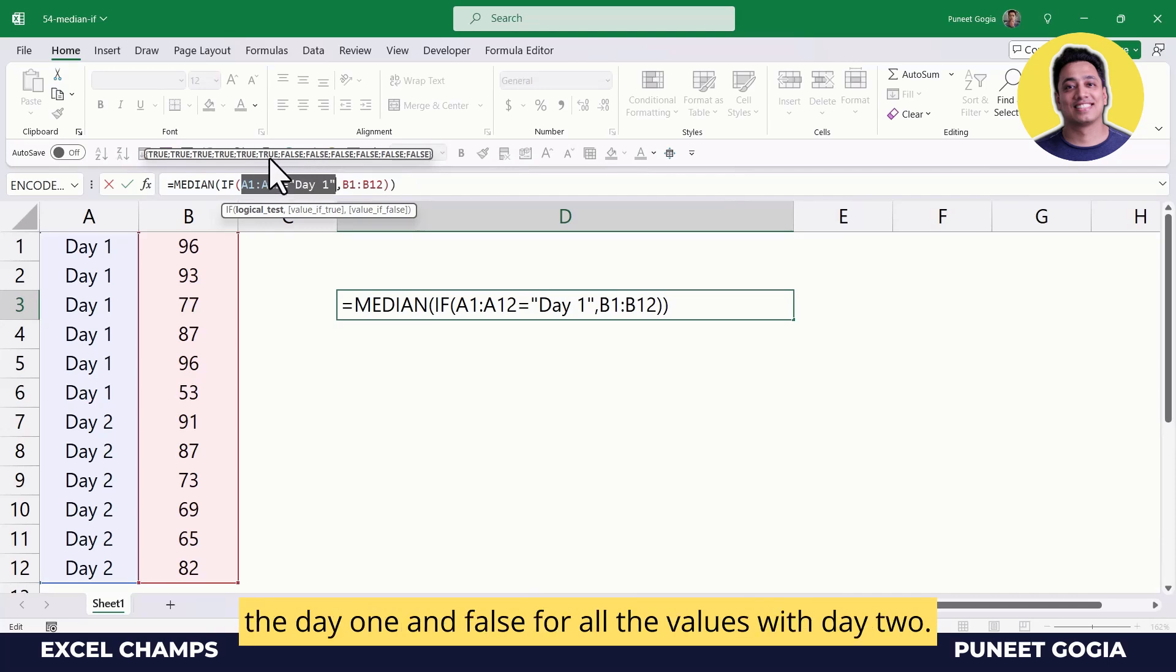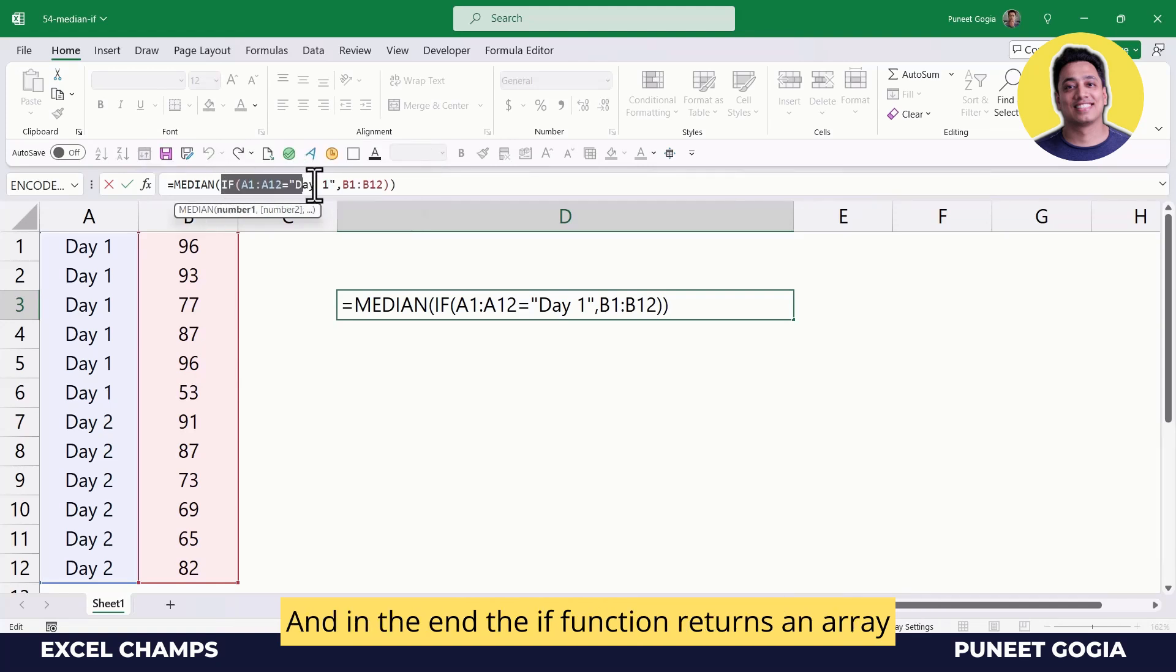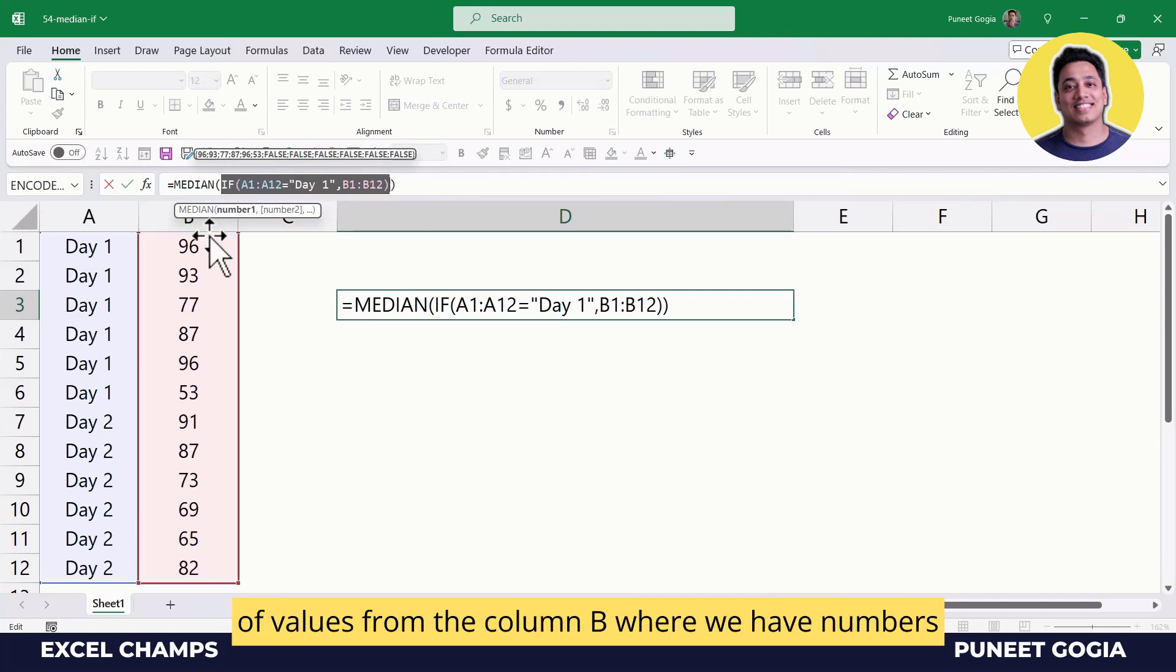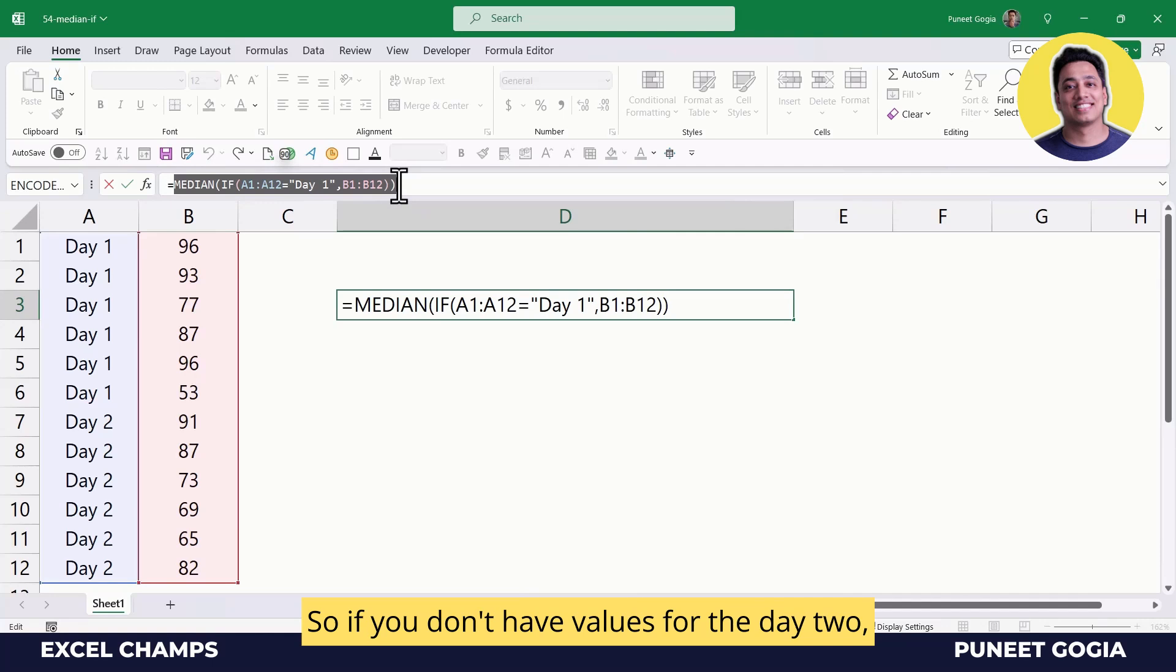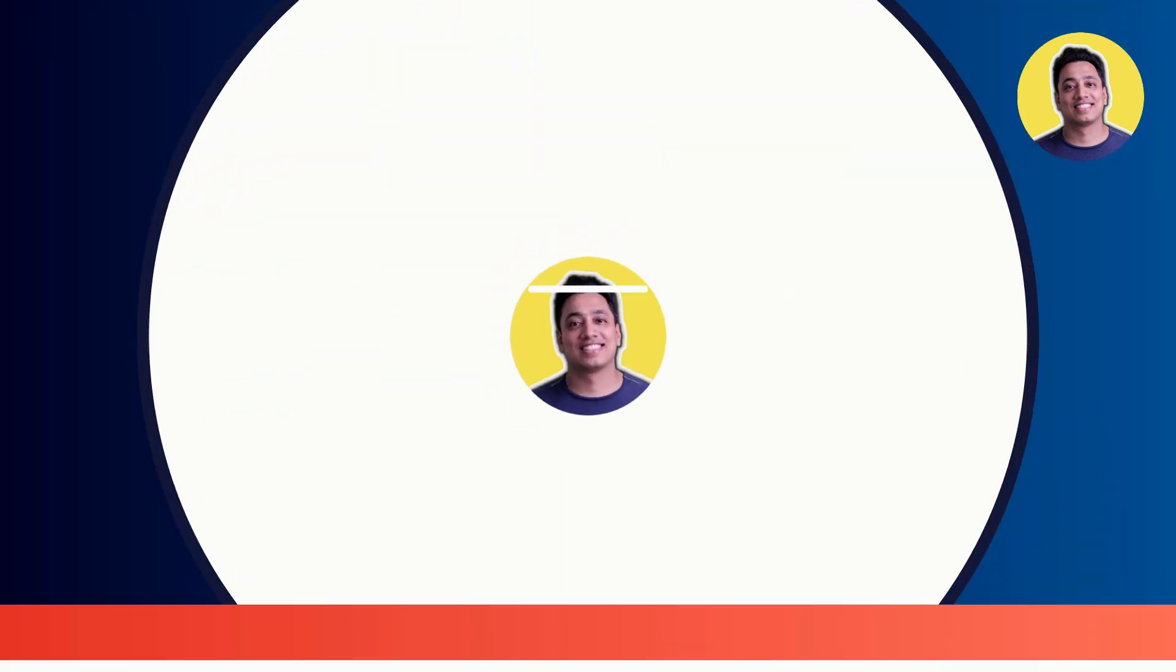And FALSE for all the values with Day 2. The IF function returns the array of values from column B where we have numbers for Day 1 and FALSE for Day 2. The MEDIAN function calculates the median using those values. So if you don't have values for Day 2, it will only calculate the median for Day 1 values.